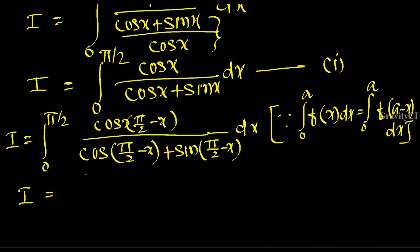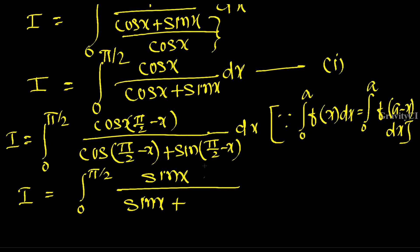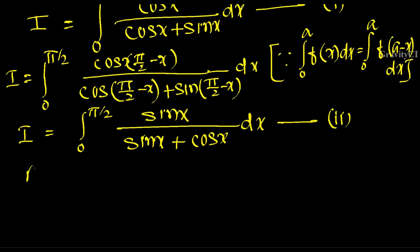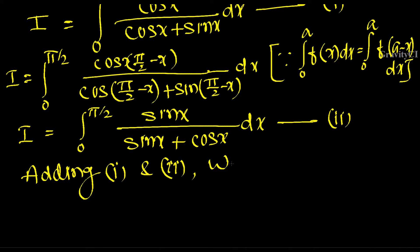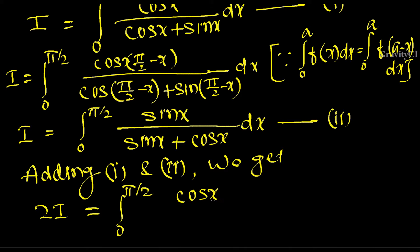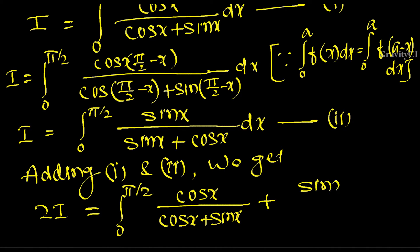So I equal to integral from 0 to pi by 2 of sin x by cos x plus sin x. We call this the second equation. Adding the first equation — cos x by cos x plus sin x — and the second equation — sin x by cos x plus sin x — gives 2I.